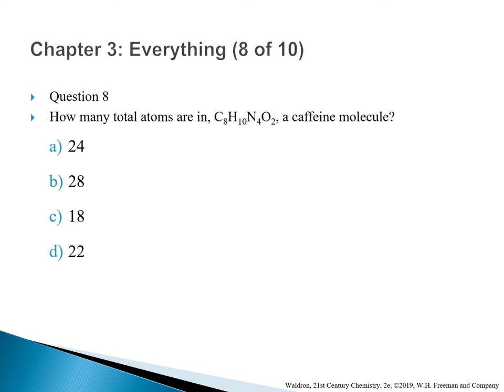Question 8: How many total atoms are in C8H10N4O2, a caffeine molecule? A. 24. B. 28. C. 18. D. 22. The correct answer is A — 24. The question asks for the total number of atoms, so you simply add the subscripts together: 8 + 10 + 4 + 2 = 24 atoms.